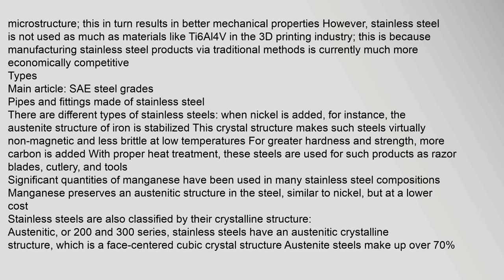There are different types of stainless steels. When nickel is added, the austenite structure of iron is stabilized. This crystal structure makes such steels virtually non-magnetic and less brittle at low temperatures. For greater hardness and strength, more carbon is added; with proper heat treatment these steels are used for products such as razor blades, cutlery, and tools. Significant quantities of manganese have been used in many stainless steel compositions, preserving an austenitic structure similar to nickel but at a lower cost.